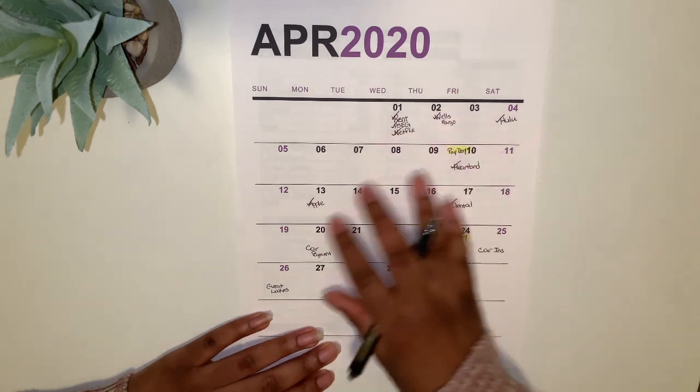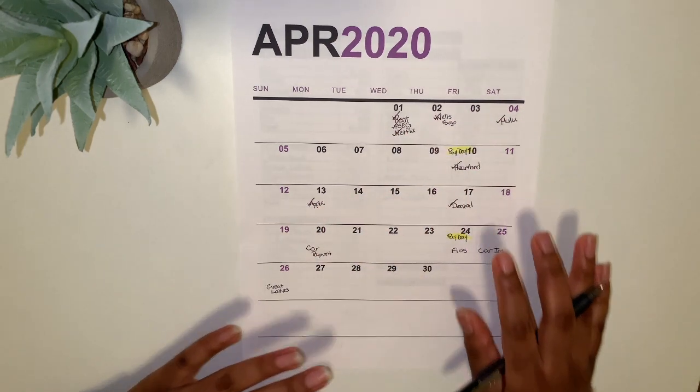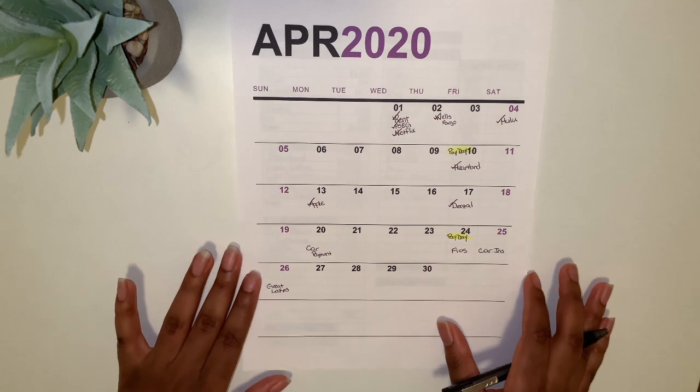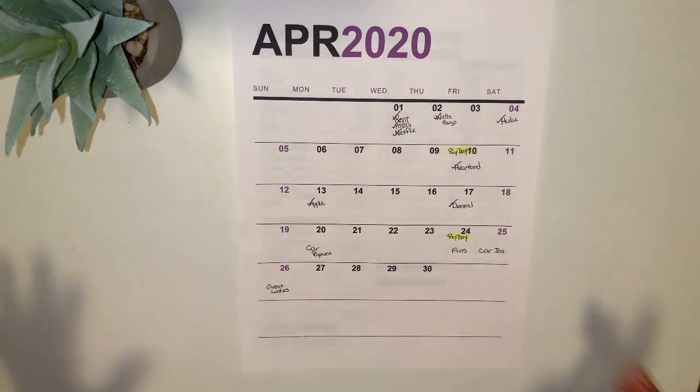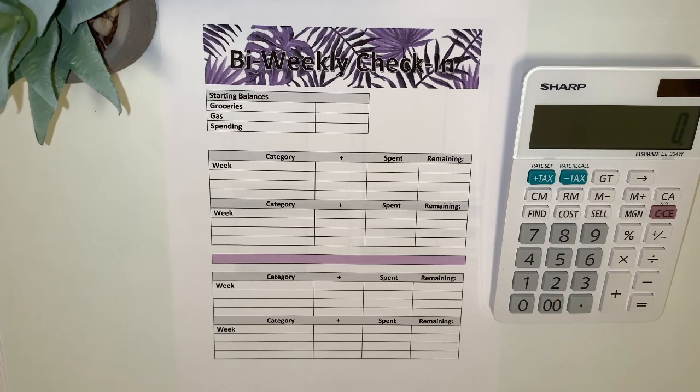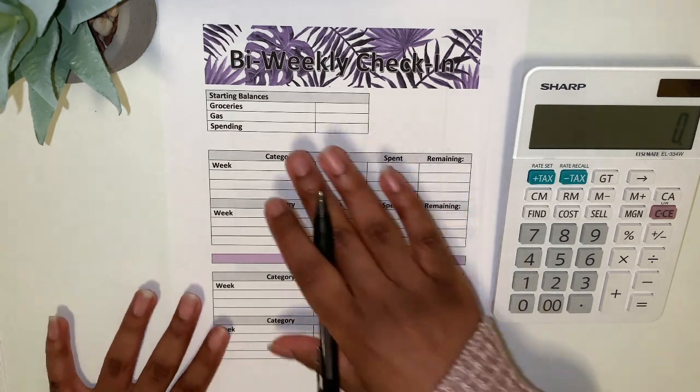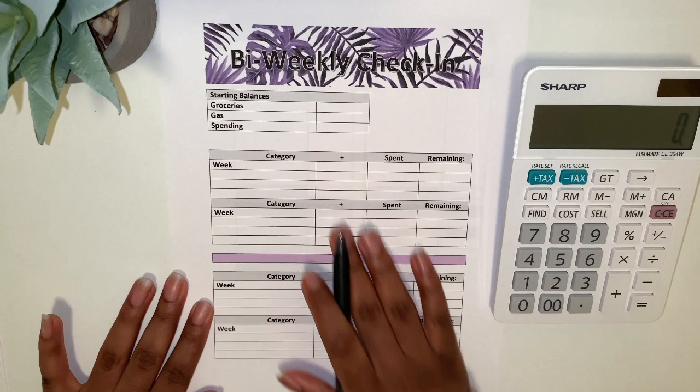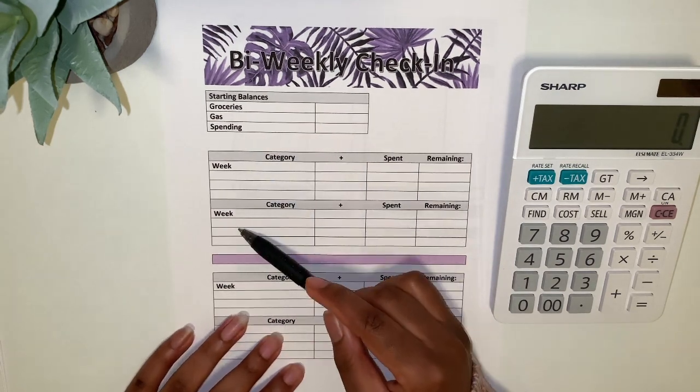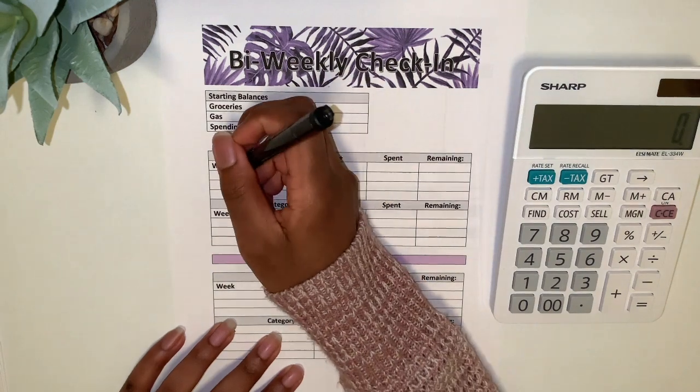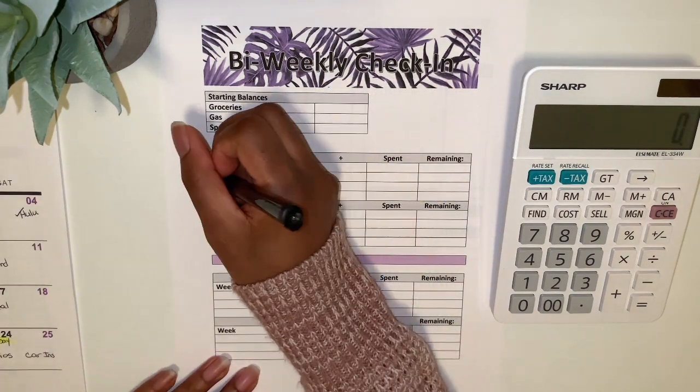Now I'm just going to check in on my bi-weekly check paper that I made. Okay, so this is my paper that I like to use for my weekly check-ins just to see how things are going. These are for the weeks.